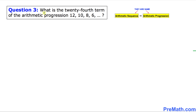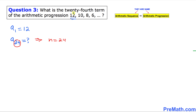Here is the next question. What is the 24th term of the arithmetic progression 12, 10, 8, 6? The very first term is 12, so a sub 1 equals 12. We want the 24th term, so n equals 24. The common difference, going from term to term, we add negative 2 each time, so d equals negative 2.